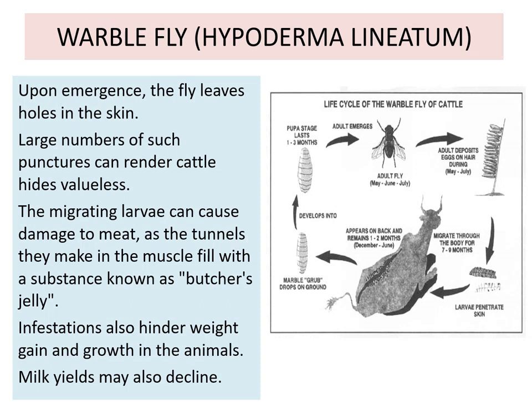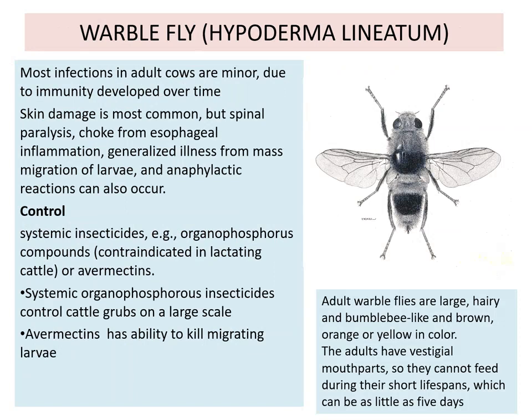This leads to the formation of warbles or swellings on the skin before emergence. Warble fly is most infectious in adult cows, but with time immunity develops. Skin damage is most common, but spinal paralysis, choke from esophagus inflammation, generalized illness from the mass migration of larvae, and anaphylactic reaction can also occur.